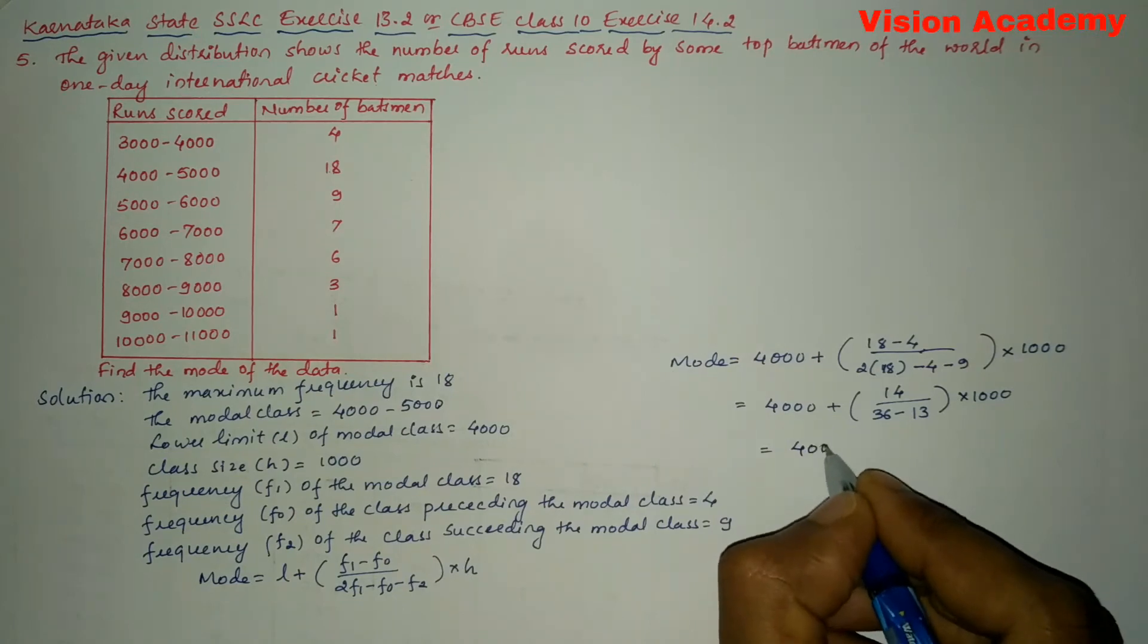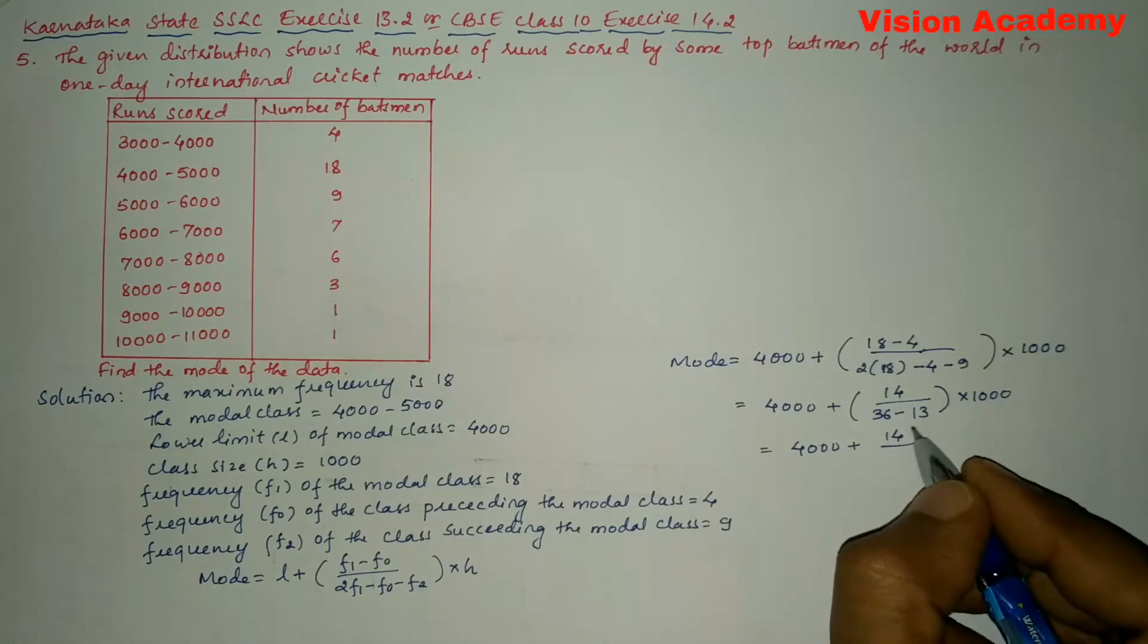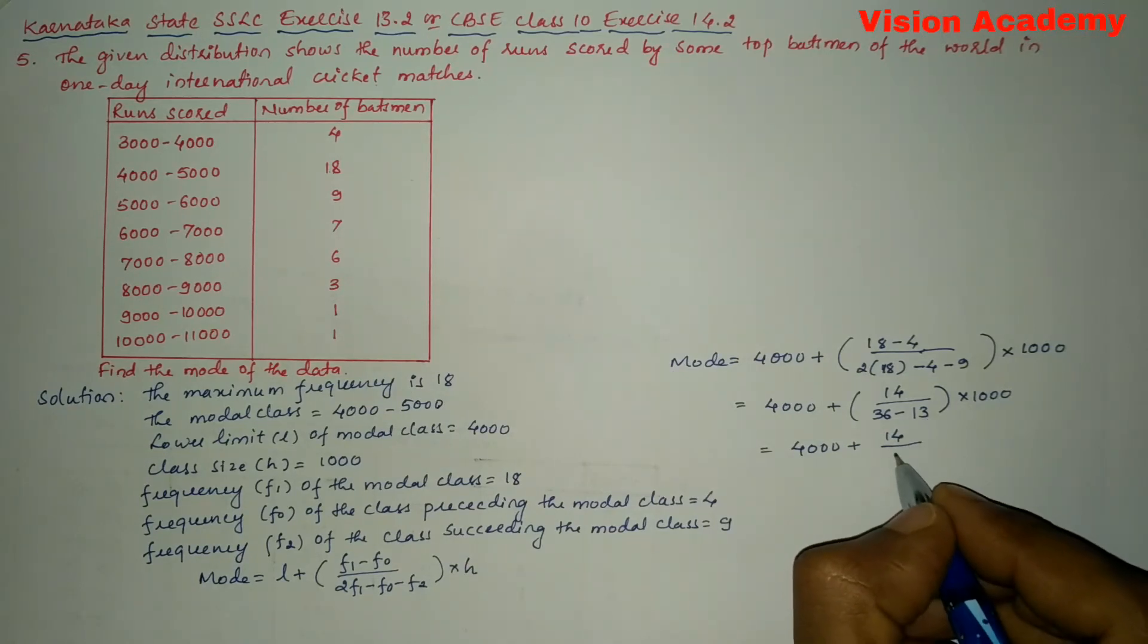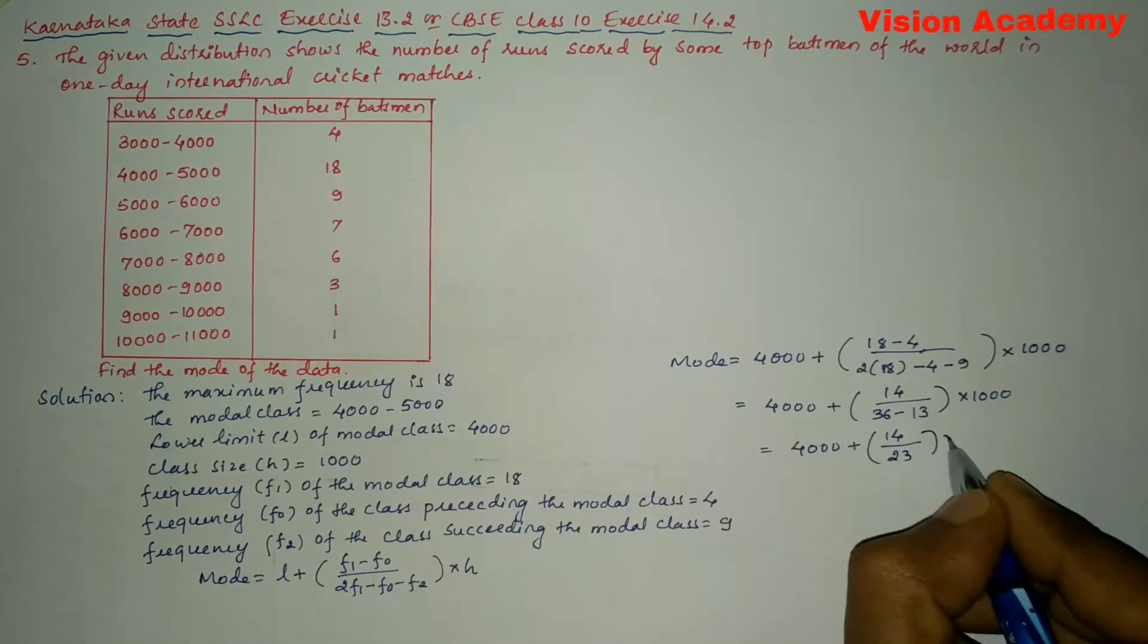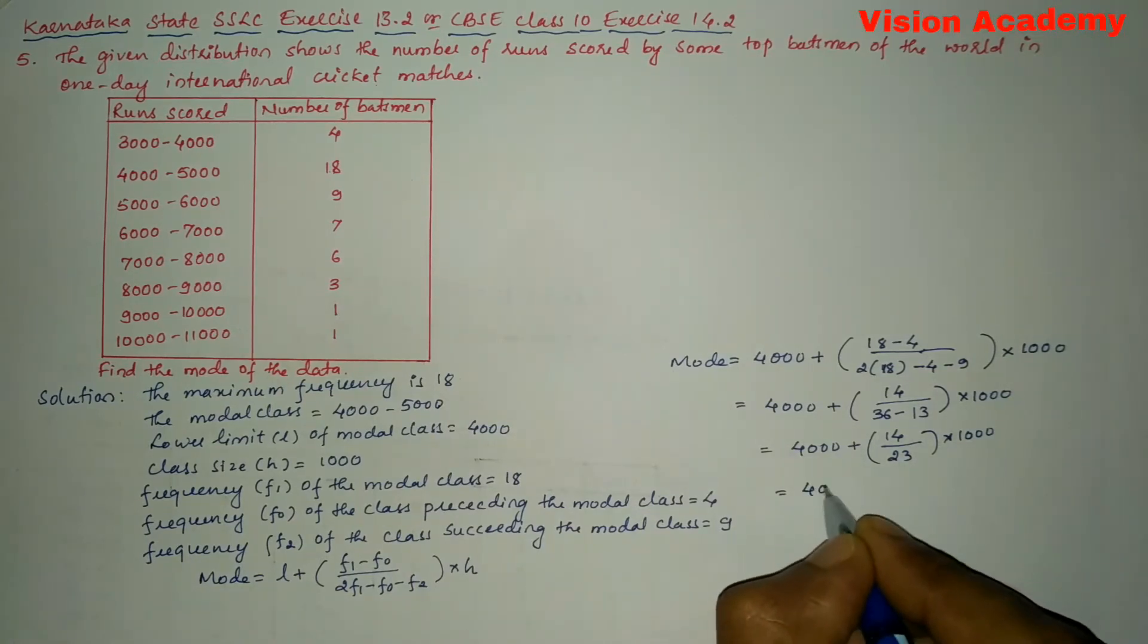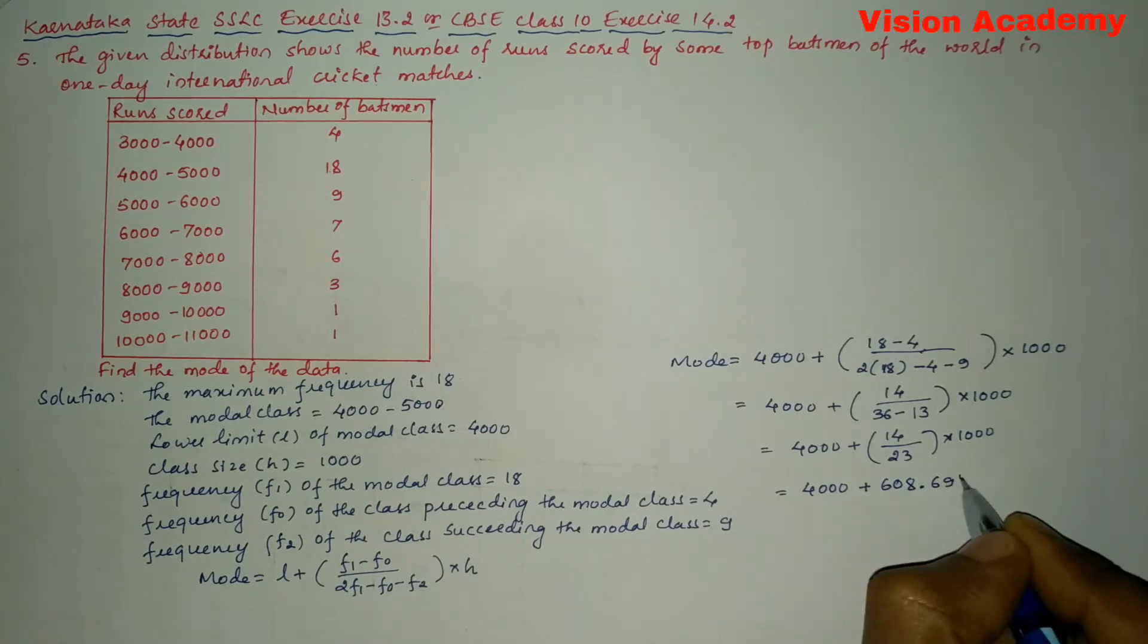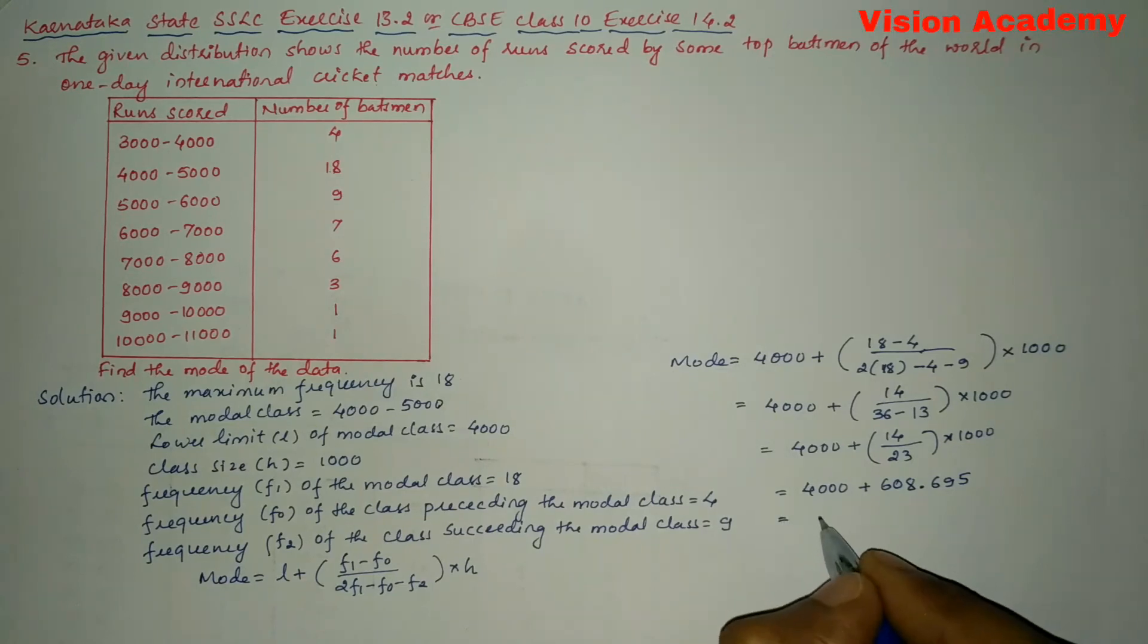Next we will further simplify: 4000 plus 14 divided by 36 minus 13, which gives us 4000 plus 14 divided by 23 times 1000 gives us 608.695, so this gives us 4608.695.